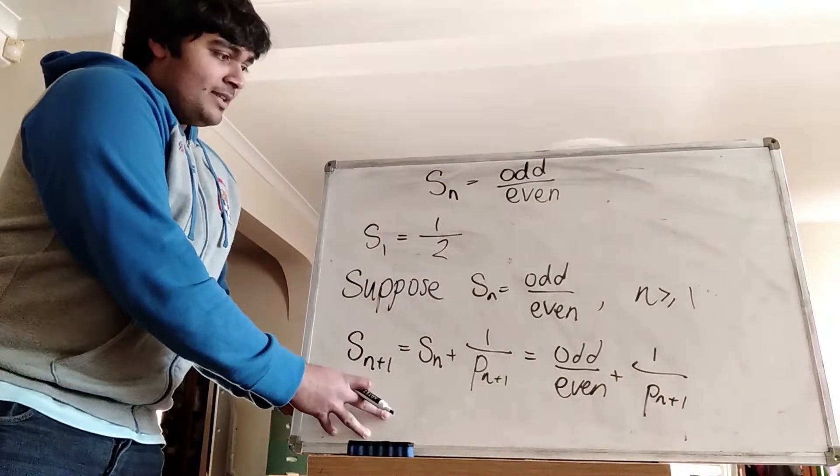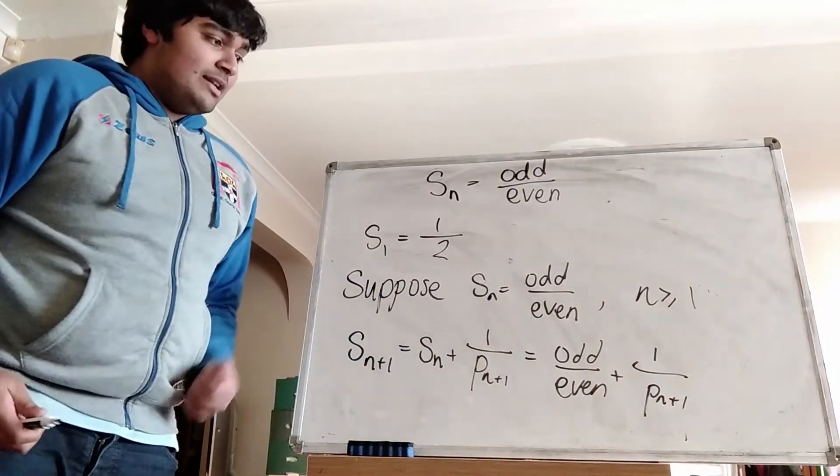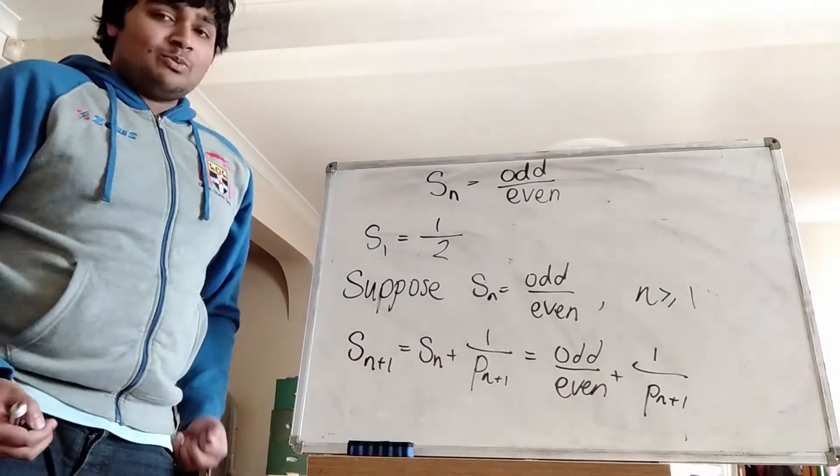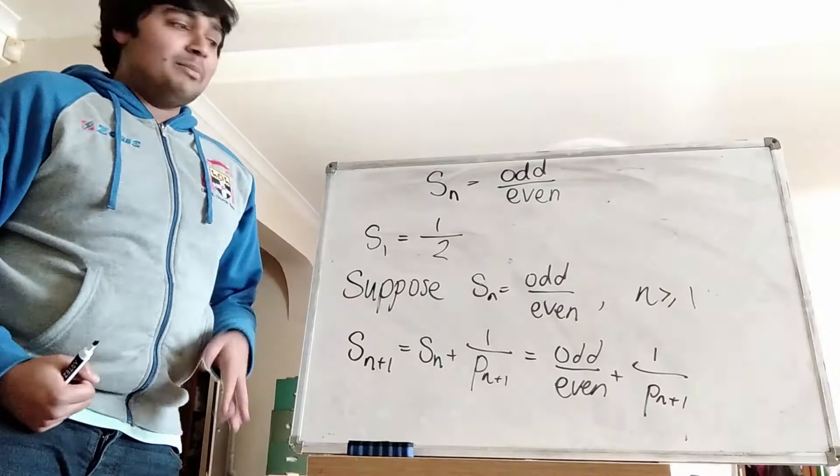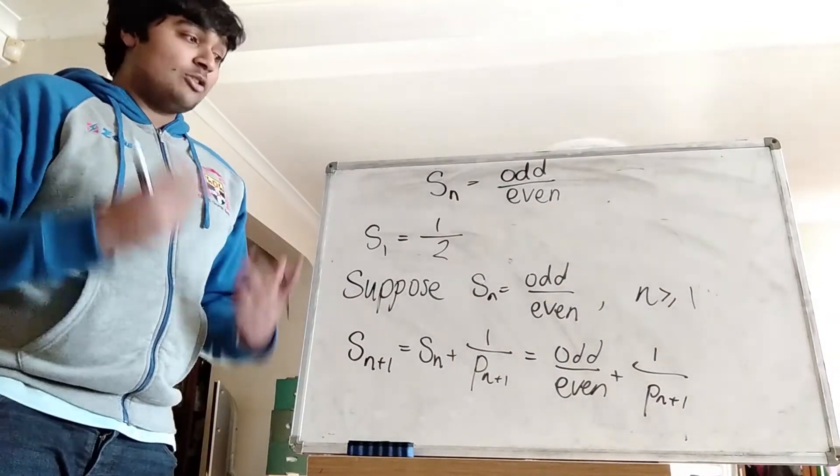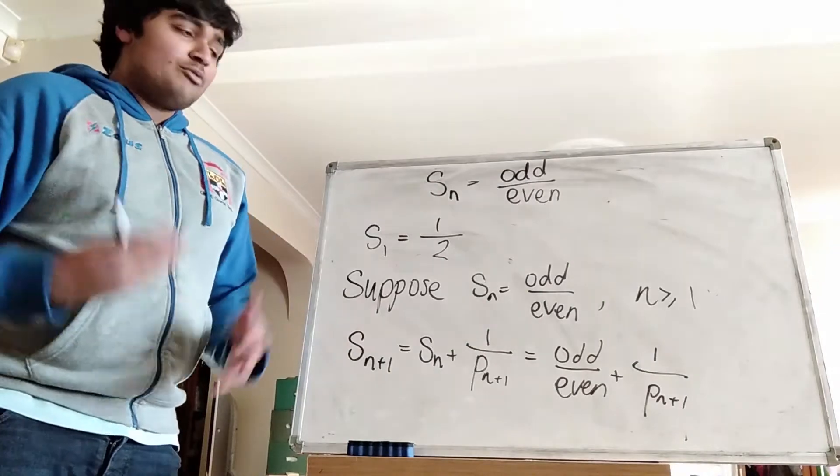Now, because we know n is at least 1, that means n plus 1 is at least 2. So here Pn plus 1 is going to be at least the second prime number, so it's going to be at least 3, but in particular Pn plus 1 is odd, because we know that only even prime number is 2.